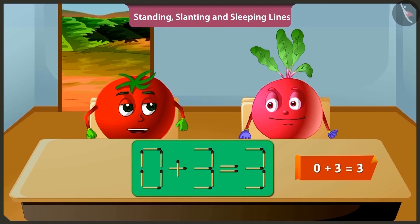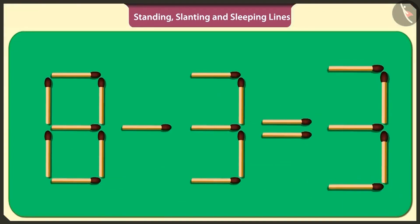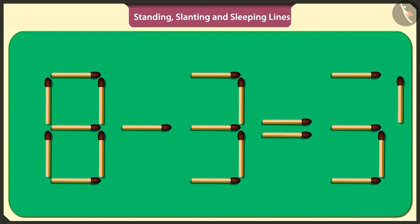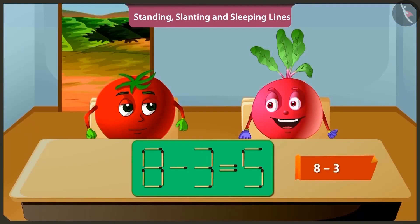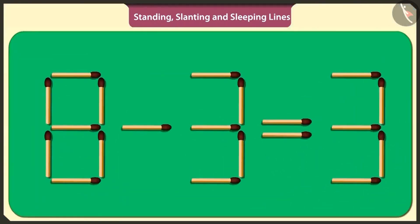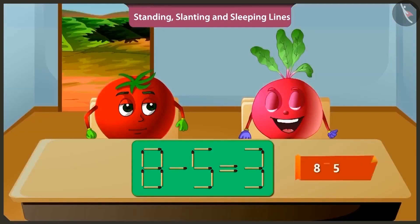Yes. Adding three to zero will make three only. Well done. Now I will solve the same puzzle in a different way. If from the answer of the puzzle, that is three, I remove this standing matchstick and place it this side, then also the puzzle will be solved. Oh wow. If we subtract three from eight, then we get five. There is another way to solve this puzzle. By removing this standing matchstick and placing it vertically here, three is converted to five. And thus the puzzle will be solved. When we subtract five from eight, we get three. This is fun.